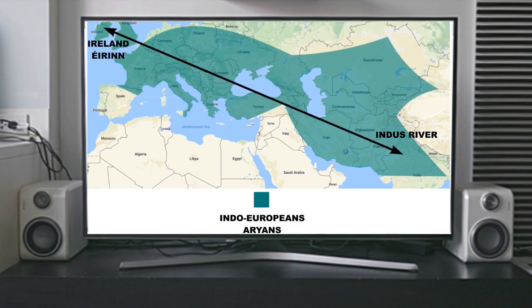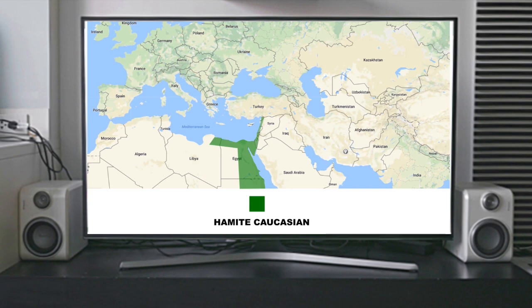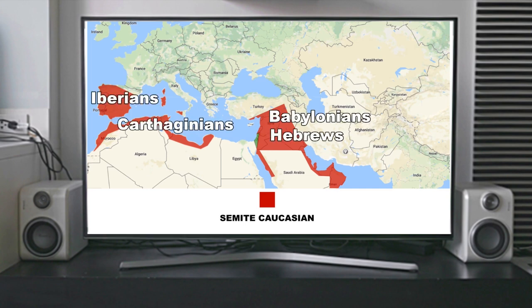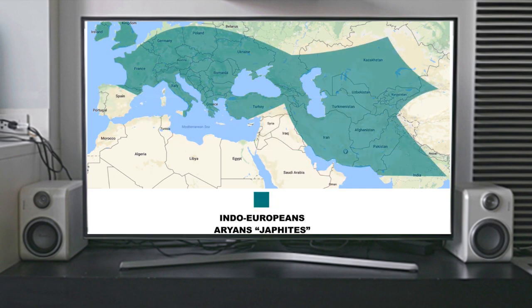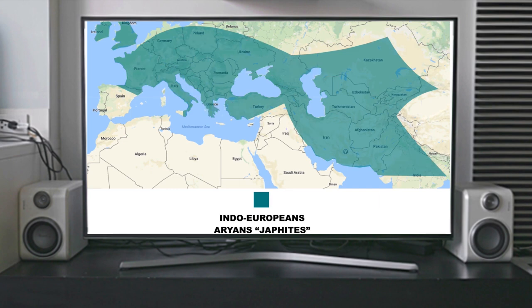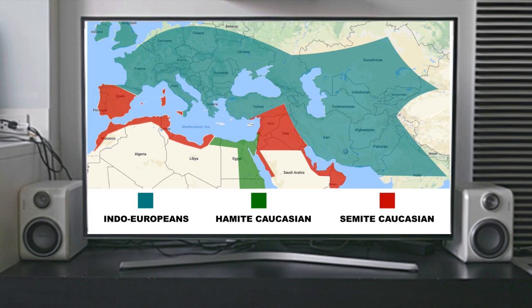Traditionally, it was taught that there were three Caucasian groups: the first being the Hamite Caucasians, who became known as the Egyptians; the second being the Semite Caucasians, who became known as the Babylonians, Hebrews, Elamites, and Assyrians; and the third being the great Indo-Europeans, or Japhites, also known as the Aryans, which included northern Indians, Greeks, Medes, Latins, Celts, Germanic races, Slavs, and Russians, also known as Scythians. This was taught in schools, universities, and even in church. It's really in the last 150 years that we've seen a major change in the biblical story at the hands of globalization.